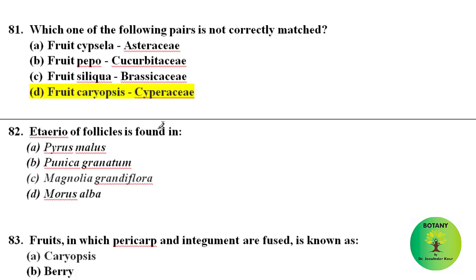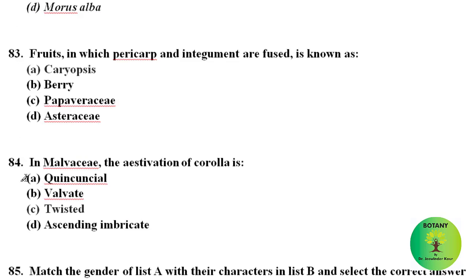Aetario of follicles is found in Magnolia grandiflora — this is the correct option. Fruits in which the pericarp and integument are fused are known as caryopsis, and these are found in family Poaceae.